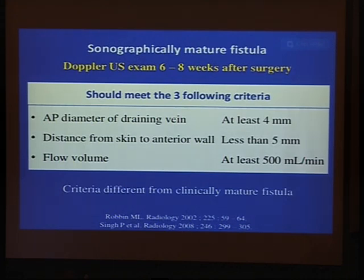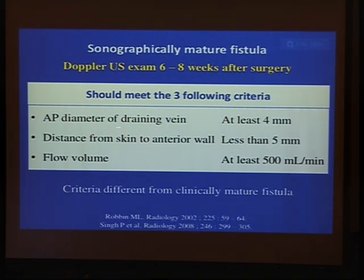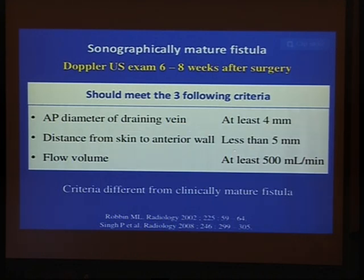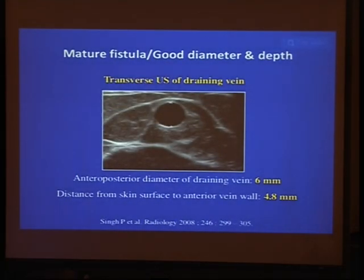How to assess a mature fistula? The diameter of the draining vein must be more than 4 mm — that is one of the criteria of a mature fistula. The second criterion is the distance of the fistula from the skin — not more than 5 mm. Third, the volume flow inside the fistula must be at least 500 mL/min. These three criteria together, assessed about two months after the creation of the fistula, are used to judge maturity.